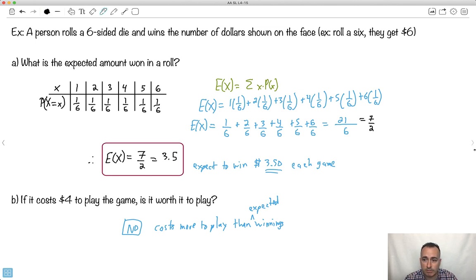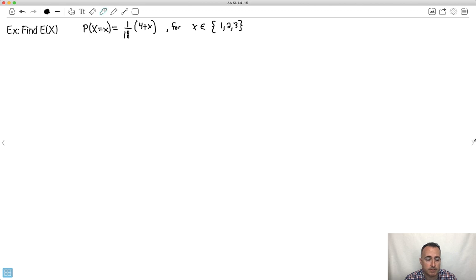So, we can do another example. So here's another example here. We have the expected value. We want to do the expected value of this, P of X equals 1 over 18 times (4 plus X), for X is an element of 1, 2, and 3. This looks complicated, sure. But let's just break it down here. Let's figure out what's the expected value.